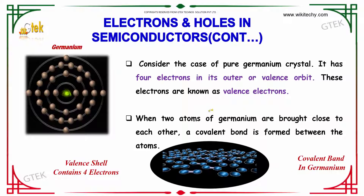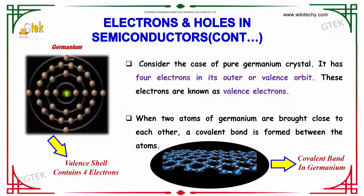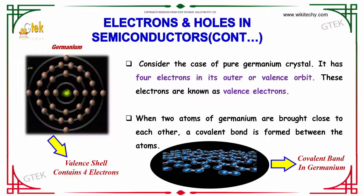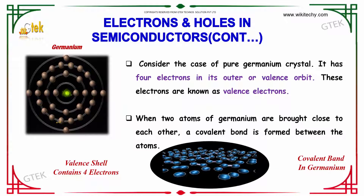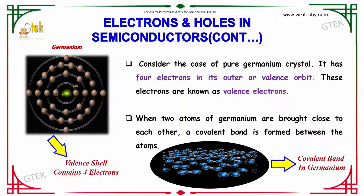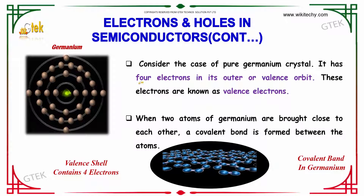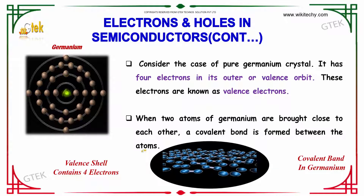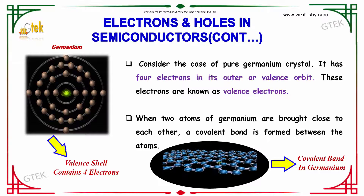Consider the case of a pure germanium crystal. It has four electrons — 1, 2, 3, and 4 — in its outer or valence orbit. These electrons are known as valence electrons. When two atoms of germanium are brought close to each other, a covalent bond is formed between the atoms. You are able to see the covalent bond forming in germanium.